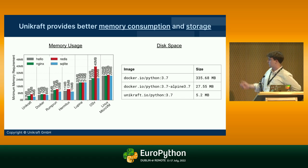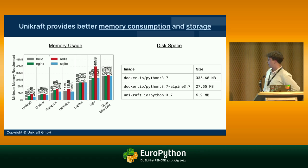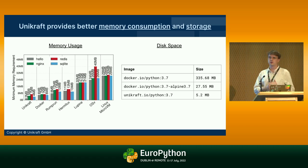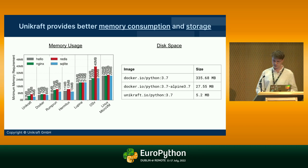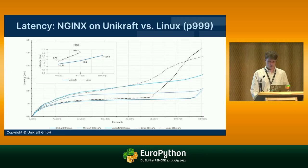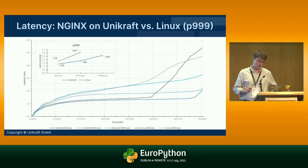Here's a comparison: if you pull the official Docker image for Python, it's around 335 megabytes. The Alpine version for the same is 27 megabytes. But when you compile the Python interpreter against Unicraft — including the file system with the same hello world program and all the standard Python libraries — the final result is just 5.2 megabytes.